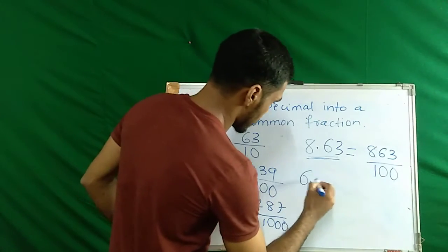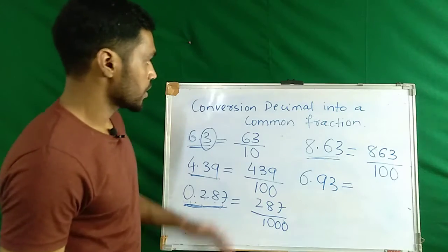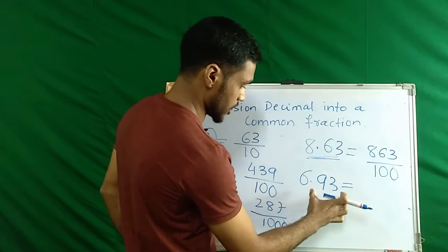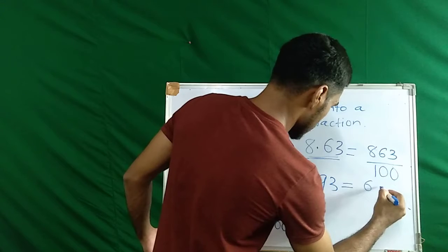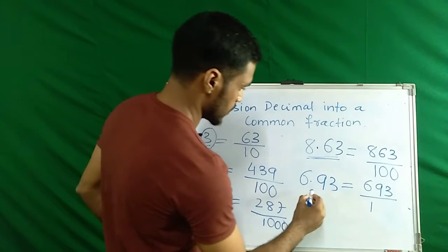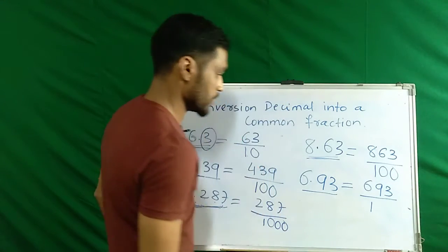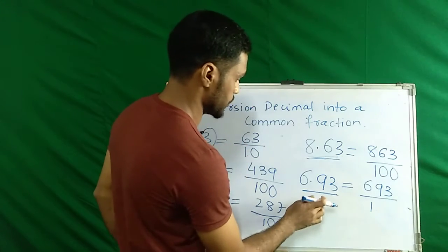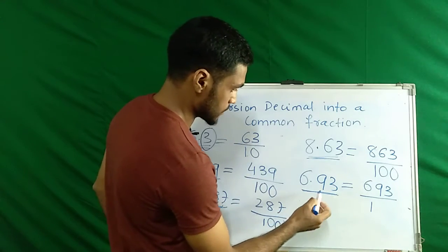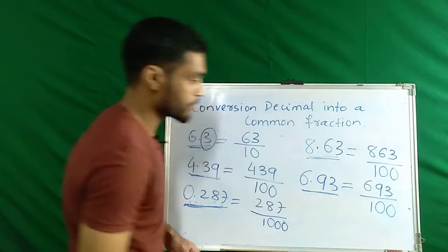Let us take another example. To convert a decimal into a common fraction, we write this decimal without the decimal point — 6, 9, 3. Then we write 1, and as per the decimal place, we write zeros on the right side of the 1. Here in this decimal we have 2 decimal places — 1 and 2 — so we write 2 zeros on the right side of the 1.